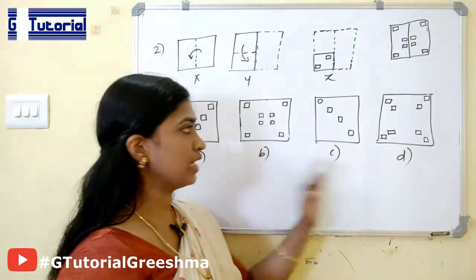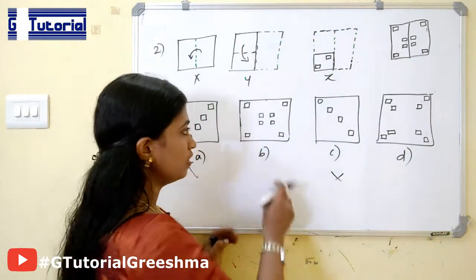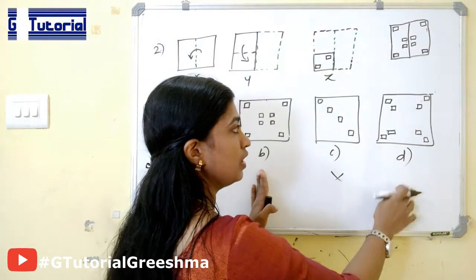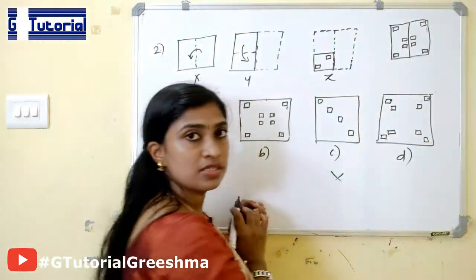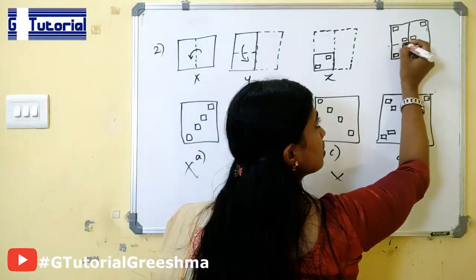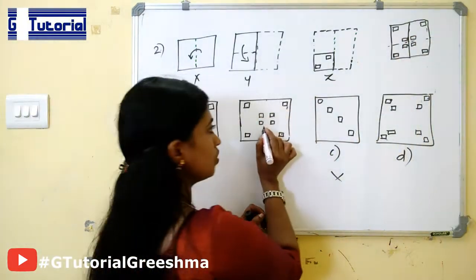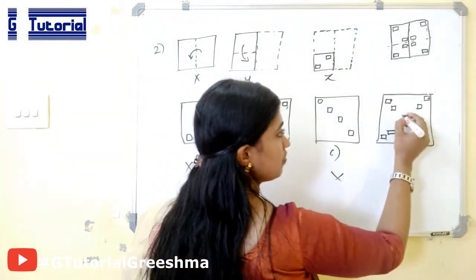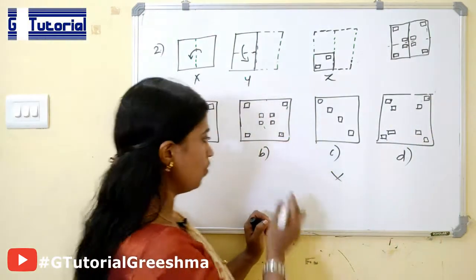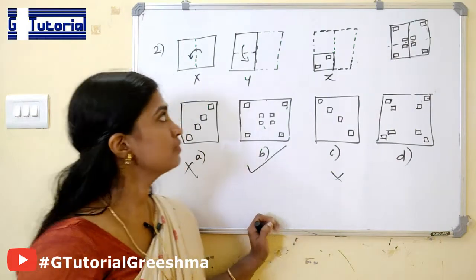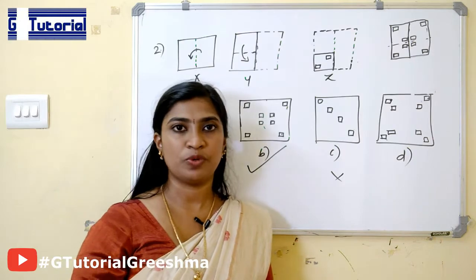Now we can check which is the correct answer. You can eliminate option A and option C. You have to choose from option B and option D. The outer squares are correct for both figures, but the inner squares which are closer to the line of folding — so this is the correct choice. In option D, the squares are apart from this line of folding. So the correct answer is option B.